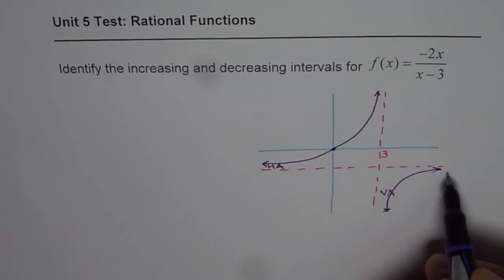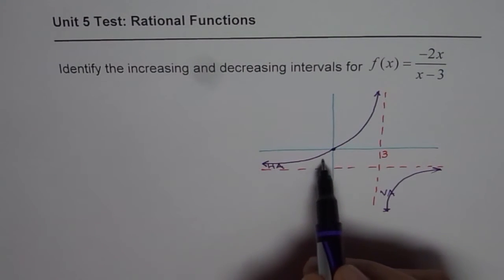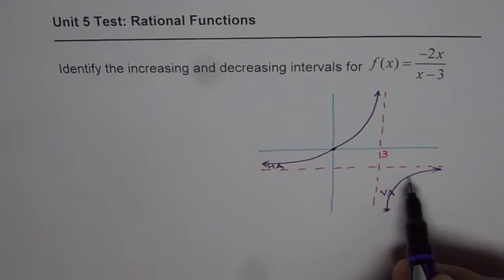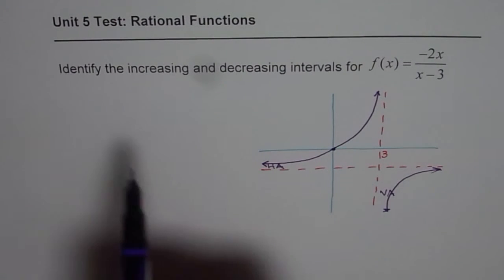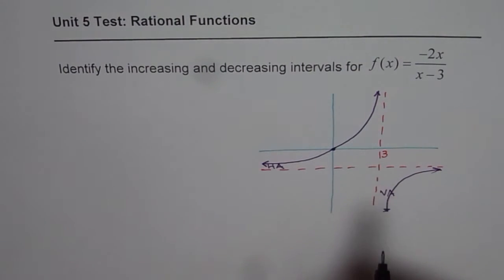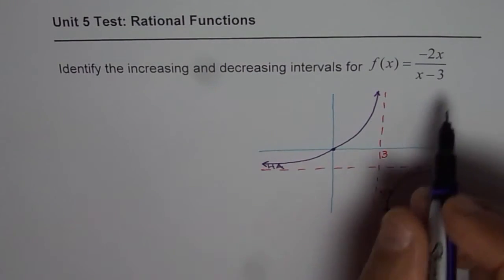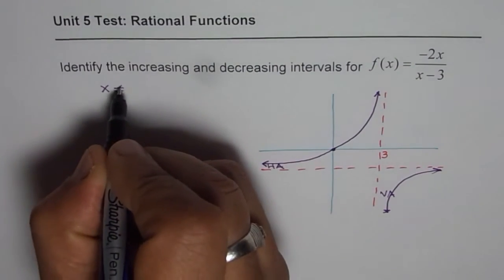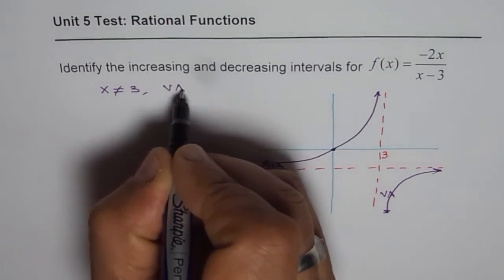Now from the graph itself you can see that the function is increasing all throughout its interval. So we say identify increasing and decreasing interval. For this particular function we know that x is not equal to 3. That is a vertical asymptote.